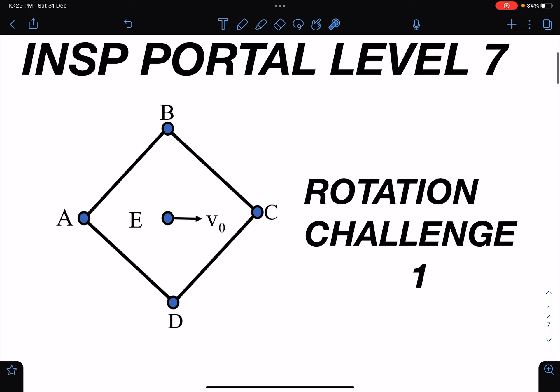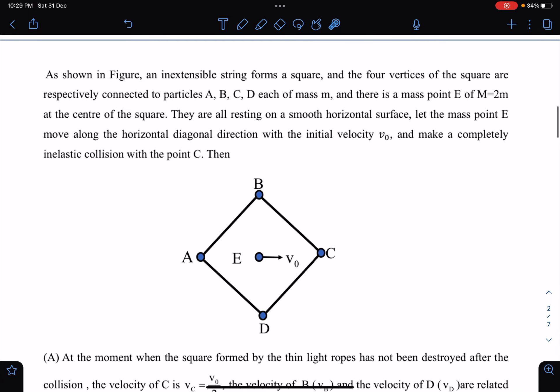Here is the problem statement: As shown in the figure, an inextensible string forms a square, and the four vertices of the square are respectively connected to particles A, B, C, D, each of mass m. There is a mass point E with M equal to 2m at the center of the square. They are all resting on a smooth horizontal surface. Let the mass point E move along the horizontal diagonal direction with initial velocity v₀ and make a completely inelastic collision with point C.